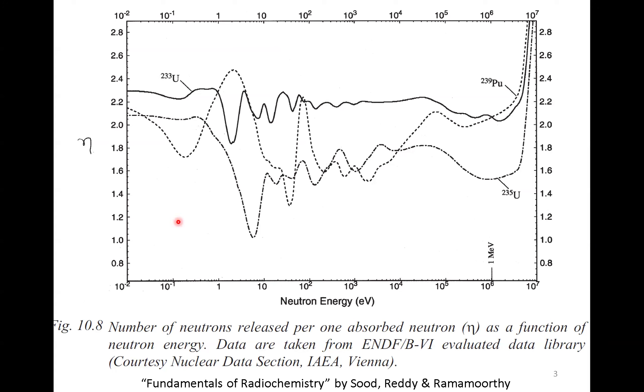Here, we show data for different fuels. Three different fuels are shown here. This is the most important fuel. This is also becoming more important. This is also an important fuel, but not so readily available. What we plot here is along the x-axis, we plot the neutron energy. Along the y-axis, we plot the number of neutrons released per absorbed neutron.